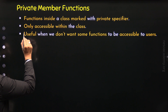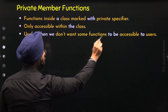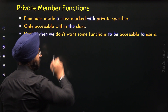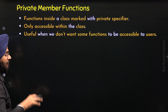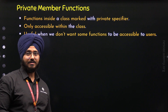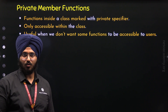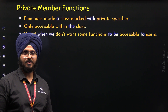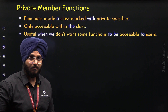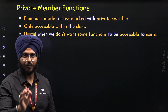Private member functions are quite useful when we don't want some functions to be accessible to users. If we want some member functions to be not accessible to the outside world — that is, from outside the class — then we can make those member functions private.